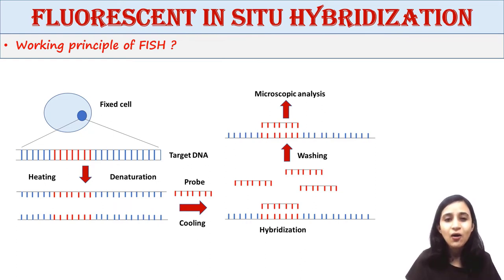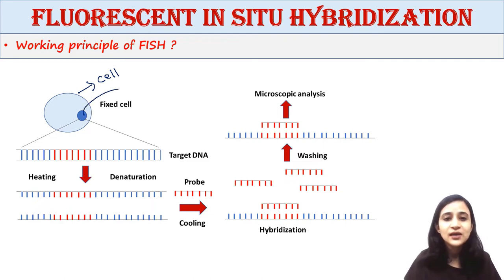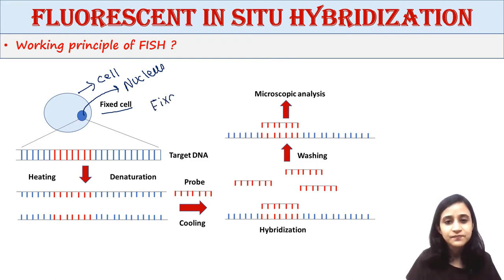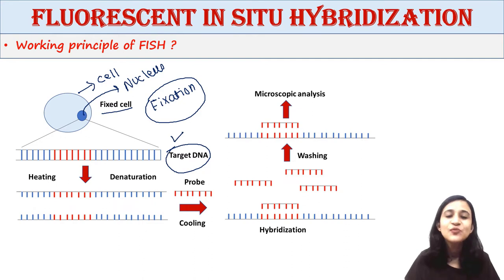Next, the working principle of FISH. The FISH technique is performed in the following steps. First, we have the cell with its nucleus. The first step is fixation — we fix the cell. Then the sample is heated. Inside the cell we have the target DNA present in the nucleus, and we apply heat to the sample.